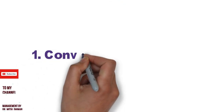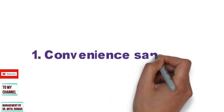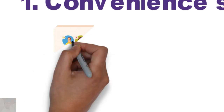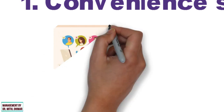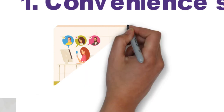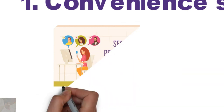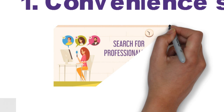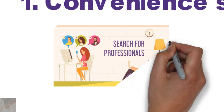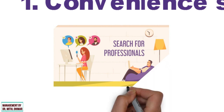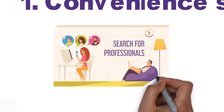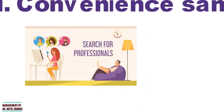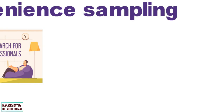Number 1: Convenience Sampling. Convenience sampling is a non-probability sampling technique in which samples are selected from the population only because they are conveniently available to the researcher. Researchers choose this sample because they are easy to recruit, and the researcher does not consider selecting a sample that represents the entire population. It is also used in pre-testing a questionnaire, and when quick reactions to a product concept are needed.